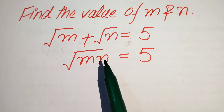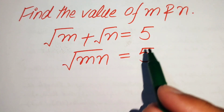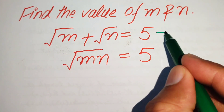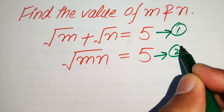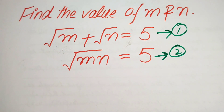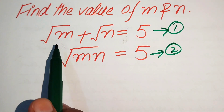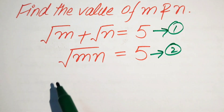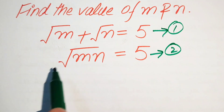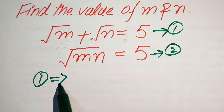We want to solve this problem for the values of m. The first step is to label our equations: equation number 1 is √m + √n = 5, and equation number 2 is √(mn) = 5. We will remove the radical signs by squaring both equations, starting with equation number 1.